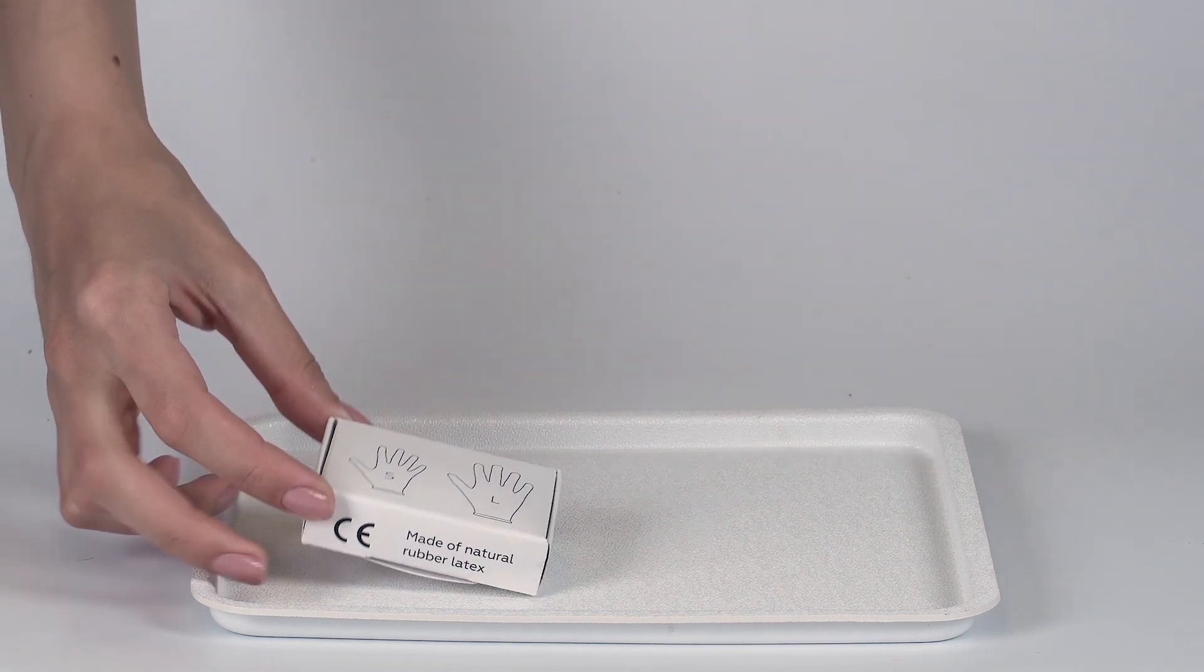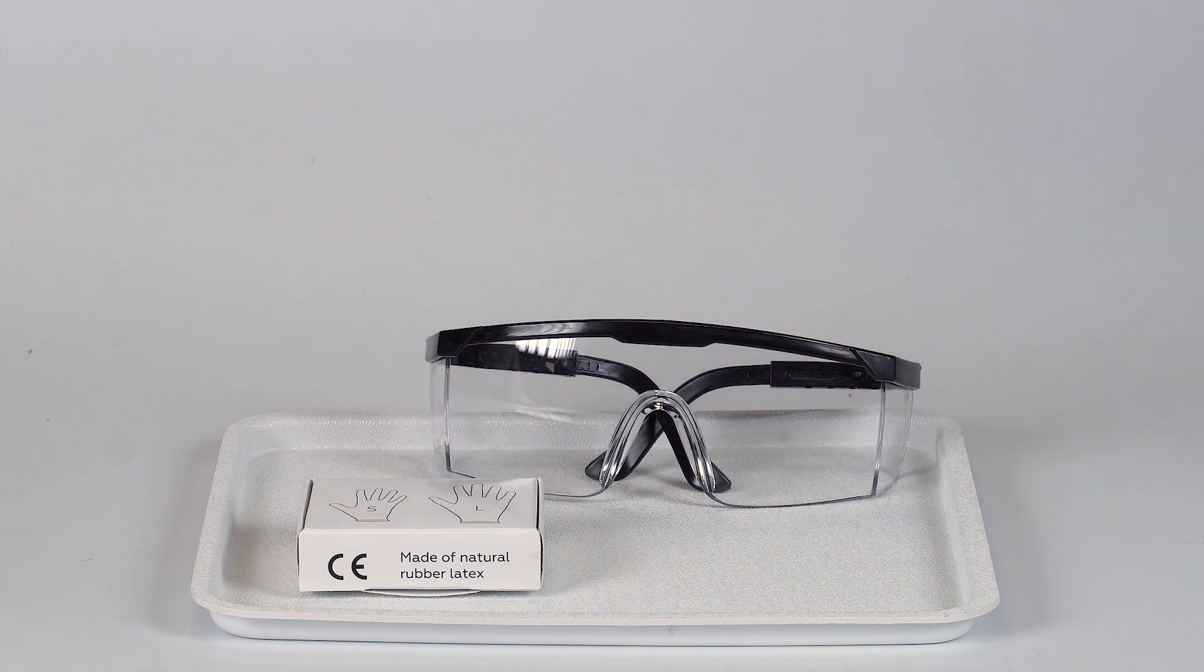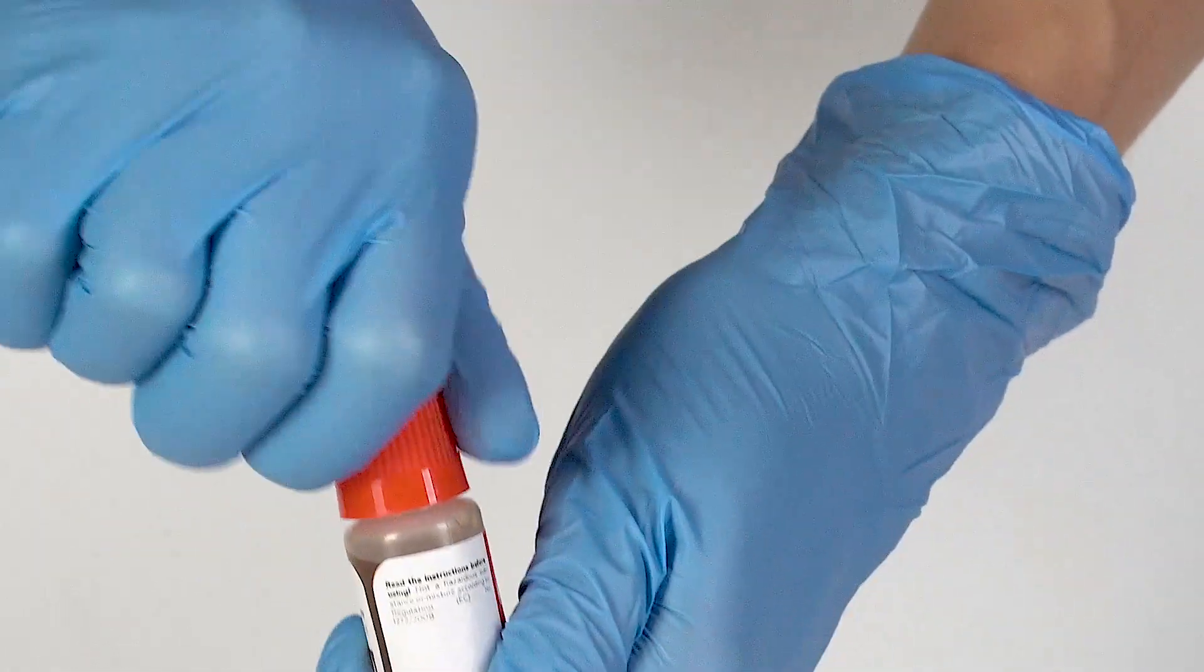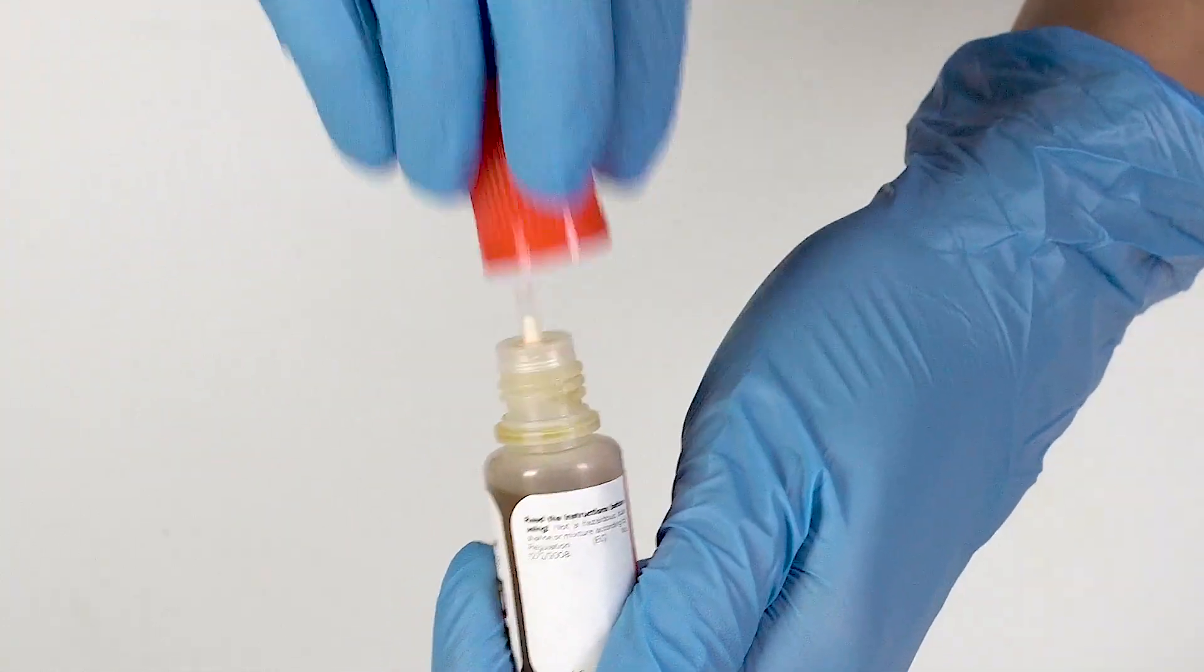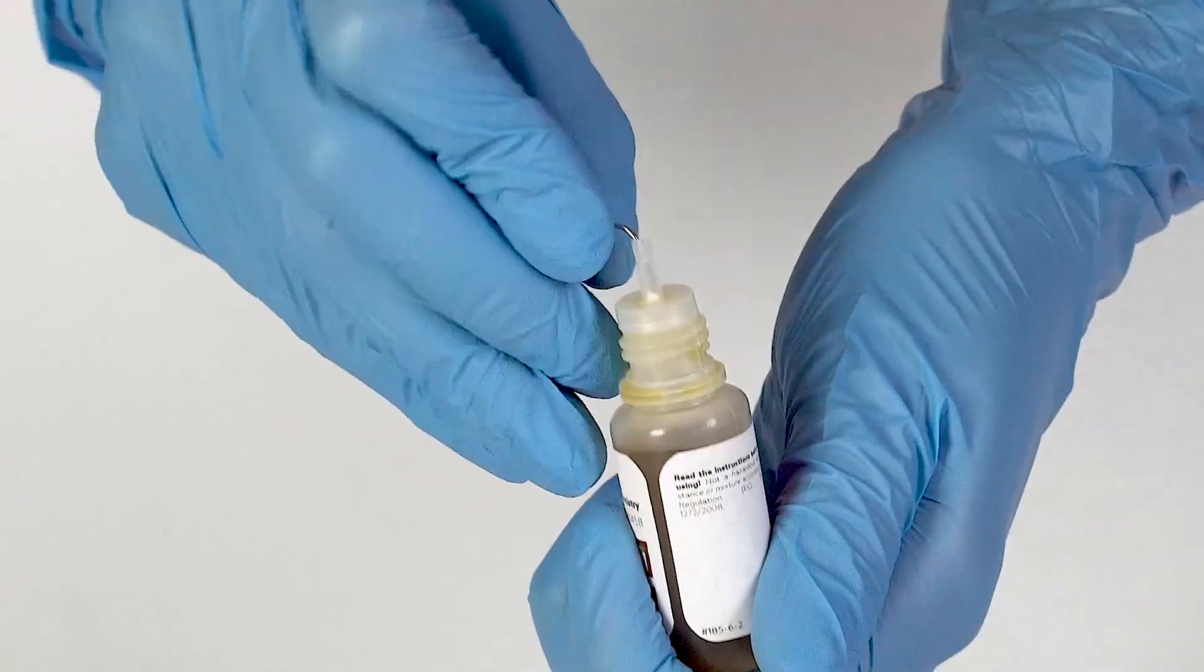Perform this experiment on the plastic tray to contain any spills. Don't forget to put on protective gloves and goggles before doing the experiment. To open a bottle containing a reagent, push the cap down and turn it. Pierce the bottle nozzle with an unbent paperclip.